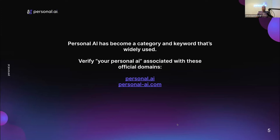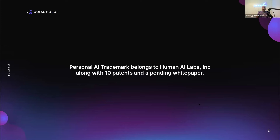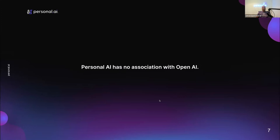Through our development of Personal AI over the past three to four years, it has become a category and is widely used, so there is often some confusion. If you are dealing with us, the official domains are personal.ai or personal-ai.com. Because the keyword is popular, there is a lot more representation of it, but we do own the trademark. We have around 10 patents and a patent white paper pending that we will be releasing later this year.